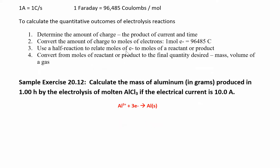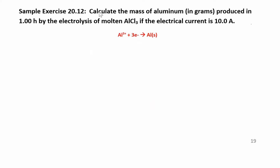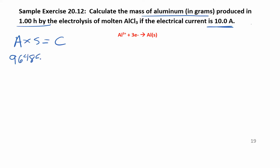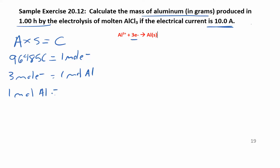It's basically four steps to do these problems. It might be easier to just do the example and talk about all the pieces as we go through. Calculate the mass of aluminum in grams produced in one hour — that's our time. We have aluminum chloride, so here's our half-reaction. I'll always give you the half-reaction, and the current is given as 10 amps. If we know amps and seconds we get coulombs, and for every three moles of electrons we get one mole of aluminum, whose molar mass is about 27 g/mol.